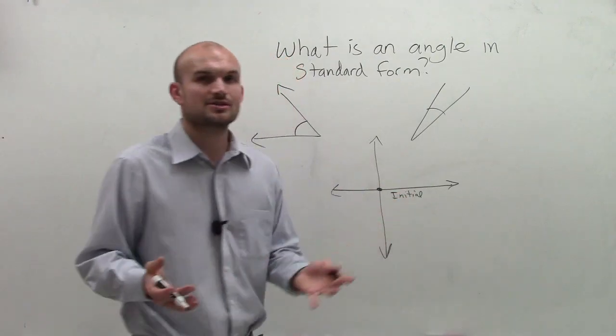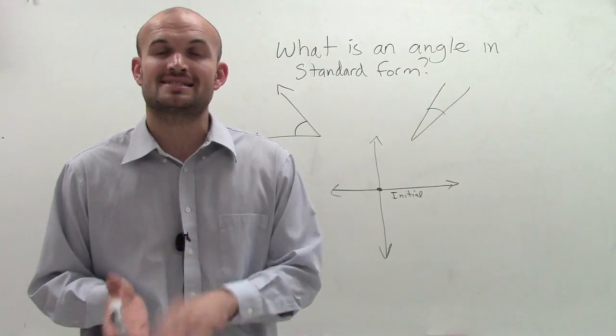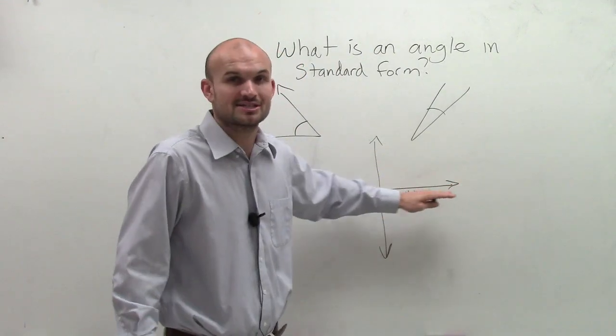This is going to be your initial side. You can kind of see where you're going to start. So whenever we measure an angle in standard form, we're always going to start with this as our initial side.